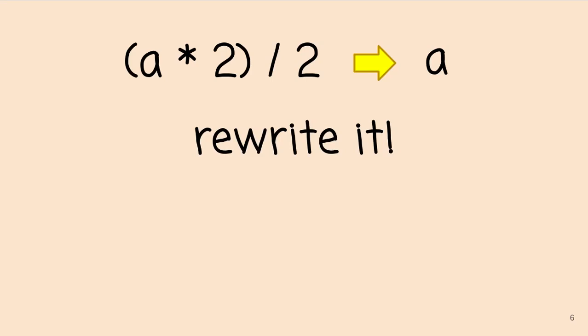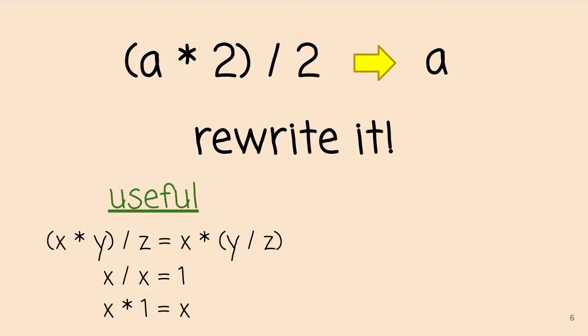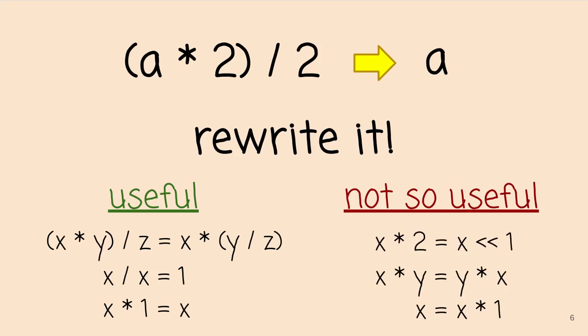No matter what you're doing with rewrites, there will be some useful rewrites and some less useful rewrites. These labels are only useful for this particular problem — we're trying to rewrite a times two divided by two into a. The left-hand side rules are exactly what you need to perform this rewriting. The right-hand side rules are not going to be useful here and will present some pitfalls that rewriting can possibly get you into.